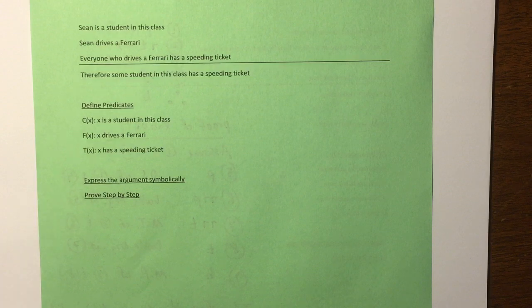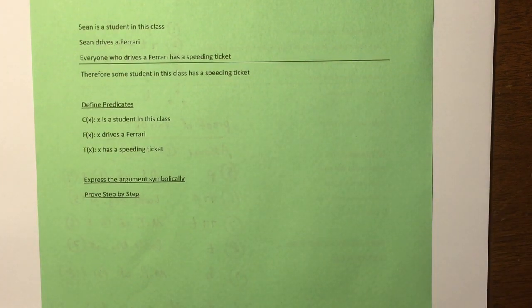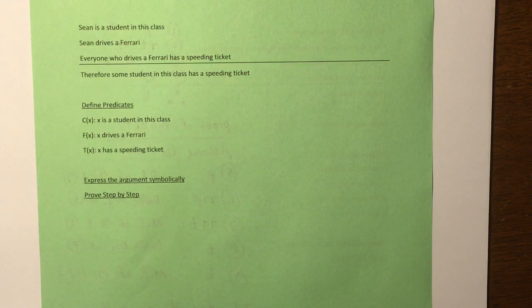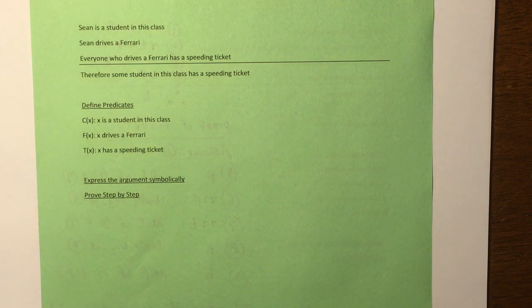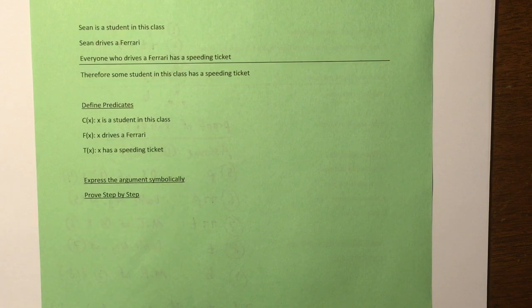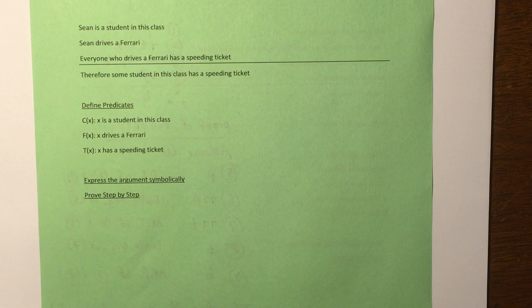I think if you read this, it's pretty convincing, right? Because clearly, if Sean is a student in this class and he drives a Ferrari, and everyone who drives a Ferrari has a speeding ticket, well, then Sean must have a speeding ticket. And therefore, someone in this class has a speeding ticket, because that's Sean. You can reason through it yourself and be convinced.